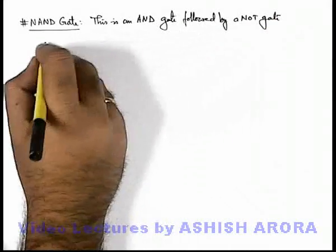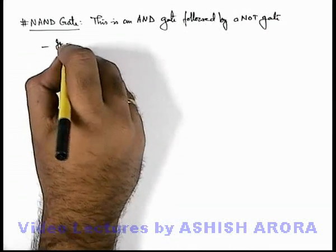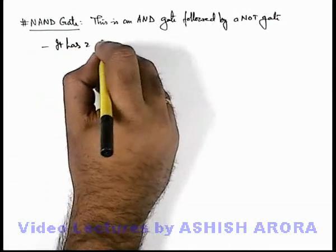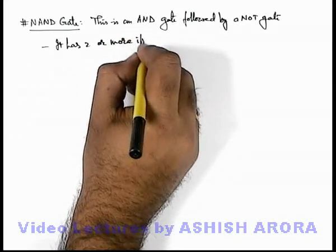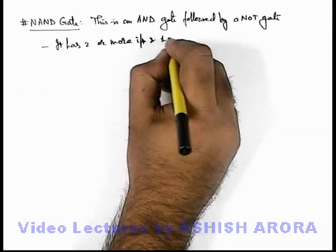Just similar to AND gate, we can write it has 2 or more inputs and 1 output.